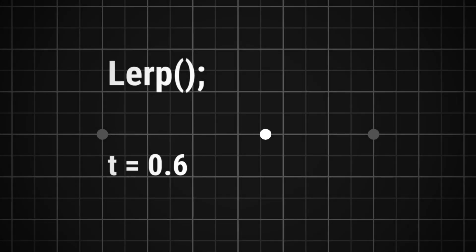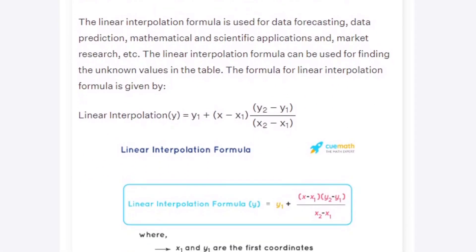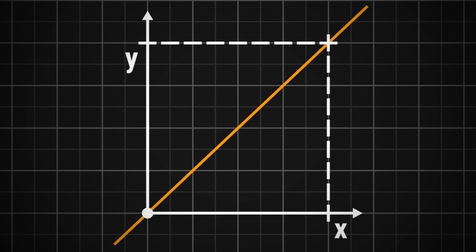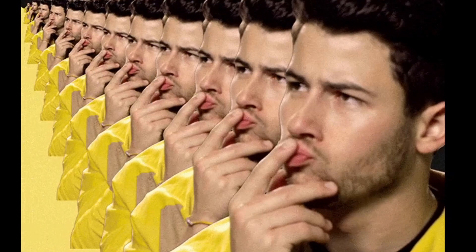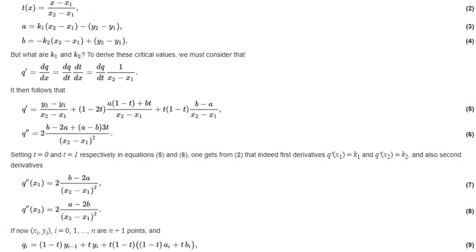If you've ever worked with the lerp method in Unity, you might know that it's used to interpolate between two numbers, a and b, based on a third number t which goes between zero and one. This is known as linear interpolation. We start from the value of t on the x-axis, draw a line vertically until we hit the diagonal, and draw a line to the left until we hit the y-axis — whatever number we hit is our result.